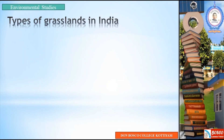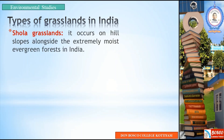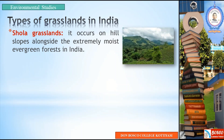In India, there are many different types of grasslands. One type is Shola grasslands, which occur on hill slopes alongside extremely moist evergreen forests in India. These are grasslands found alongside moist evergreen forests.